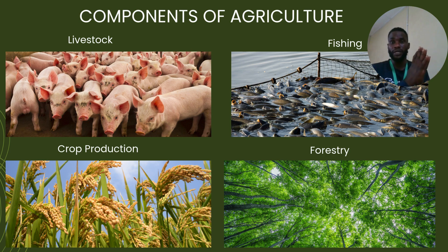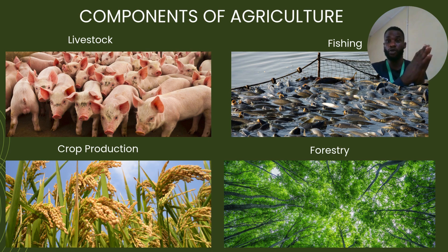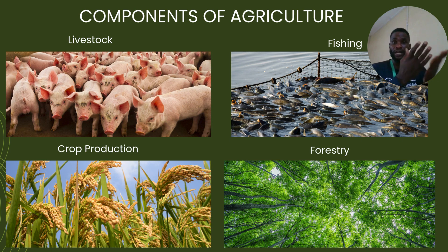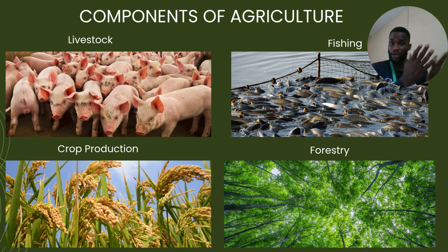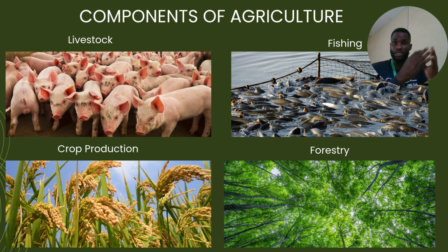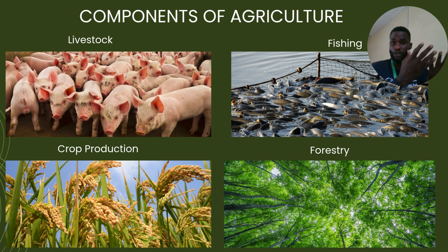Agriculture has many components or branches. Among the components of agriculture, we have livestock — that is the rearing of farm animals for man's use, consumption, or for sale. We have fishing, which deals with the rearing of different kinds of fish in different bodies of water, be it ponds, oceans, or seas.